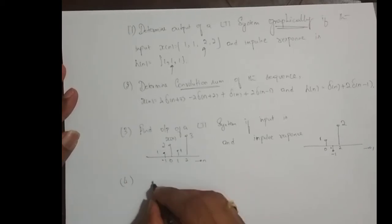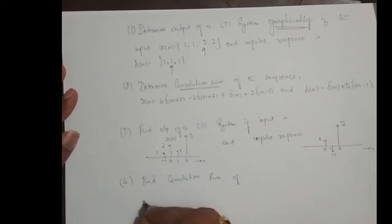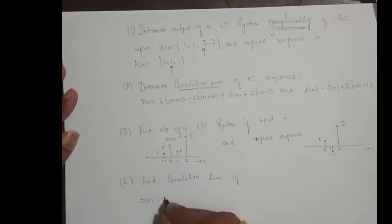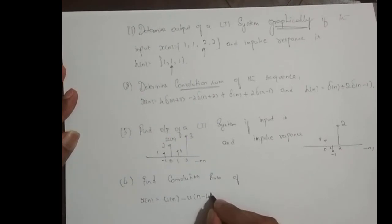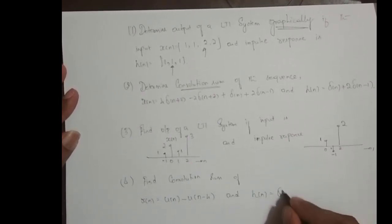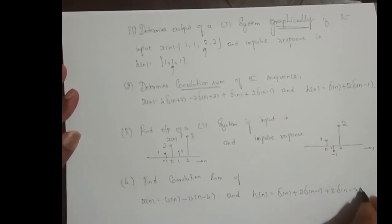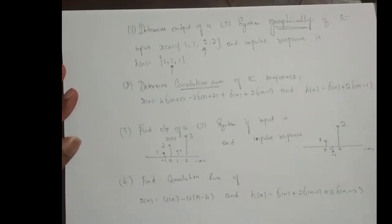In the last one, find convolution sum of x of n is equal to u of n minus u of n minus 4 and h of n is equal to delta of n plus 2 times delta of n minus 1 plus 3 times delta of n minus 2. So try to solve these problems.